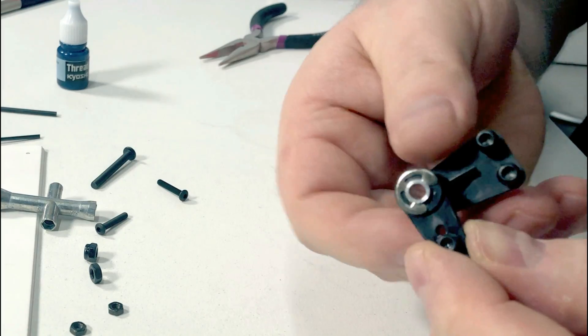And there's all our shocks built, got the fronts here and the rears there. Very nice. I've always liked these Kyosho red shocks. I think we should just take a moment to admire them.